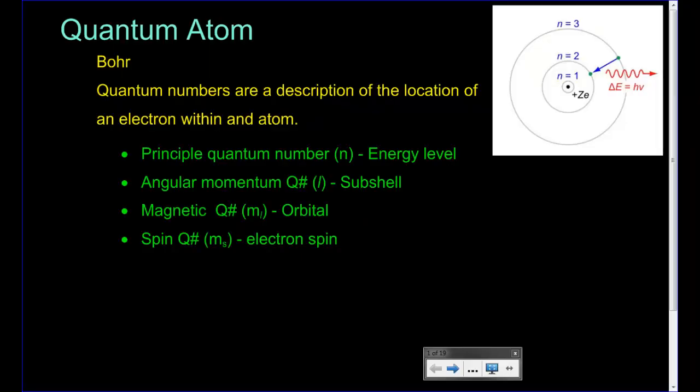Now that we've looked at the electromagnetic spectrum, one of the things that Niels Bohr figured out was that these particular waves gave us some indication of what's going on with the electrons inside the atoms. He came up with this idea of what are called quantum numbers — a description of what's going on inside the atom with the electrons.